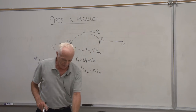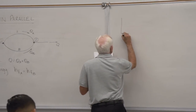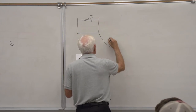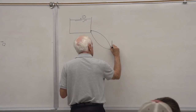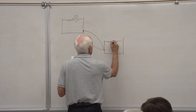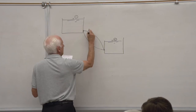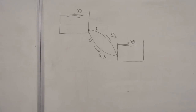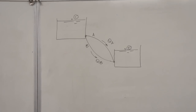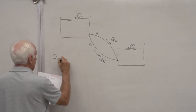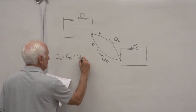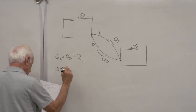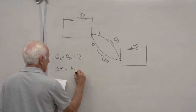Last time with series we also looked at a problem with a reservoir here — point one — with pipe A and pipe B going down to a reservoir, point two. This is pipe A, this is pipe B, with flow rates QA and QB. They use the same equations: QA plus QB equals the total flow rate Q, and the energy equation gives delta Z equals HFA or HFB.